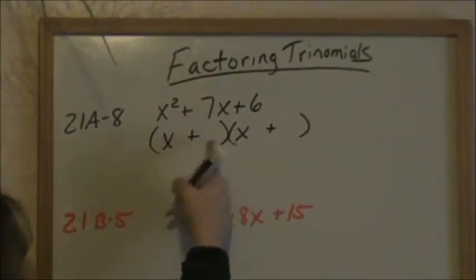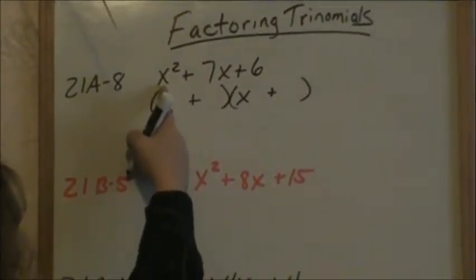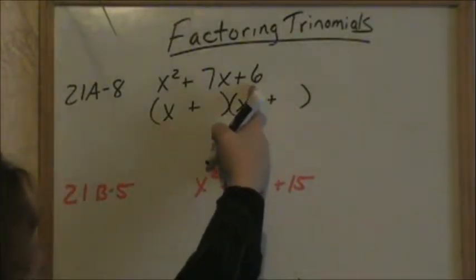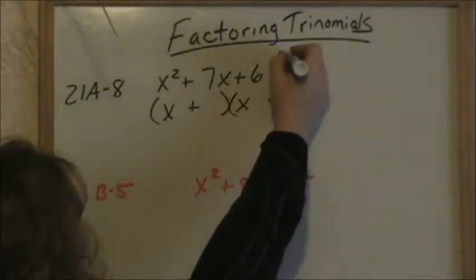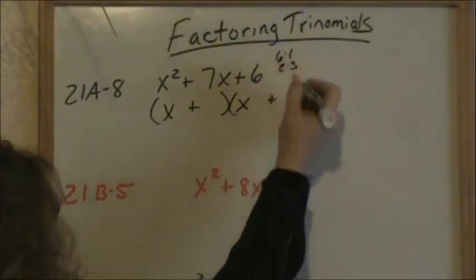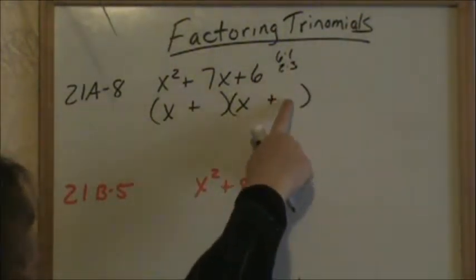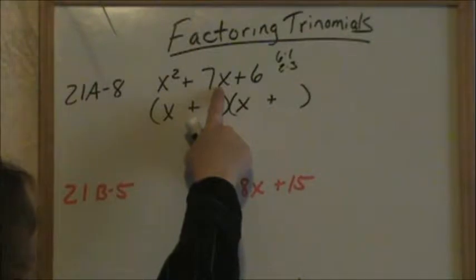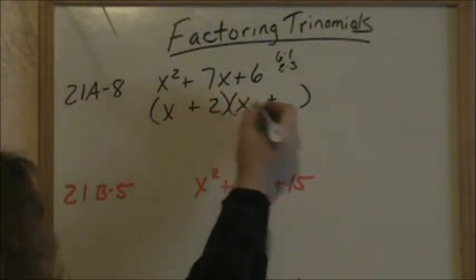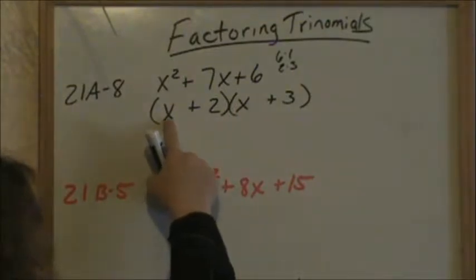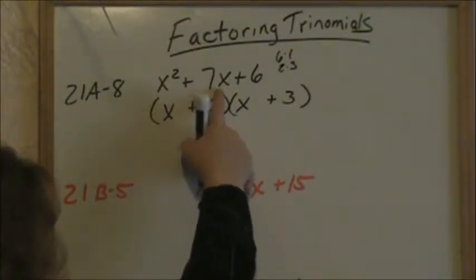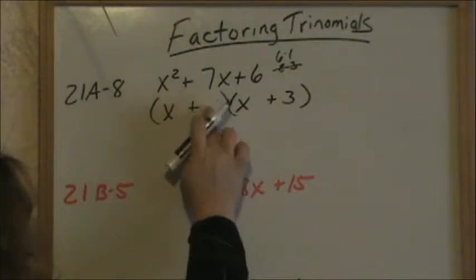The last thing you look at is the coefficients here, which is one. So one x times one x gives you an x squared. To get your last terms of your binomial, you look at the last term of your trinomial. What are the factors of six? The different factors of six are six times one and two times three. Which of these factors, when you FOIL this parentheses back out, will give you this middle term of seven x? If I put a two here and a three here, that will give me a three x and a two x, and three x plus two x is not seven x. Therefore, the two and the three are not the factors we want to use.